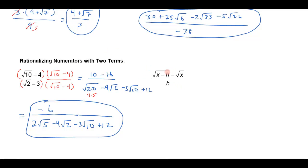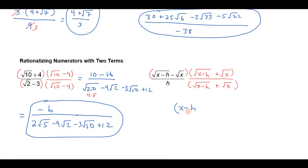Let's do one more here — rationalizing the numerator. This is a problem that actually comes from calculus. Suppose I wanted to simplify this, and what I could do is again multiply by the conjugate. In this case I'd multiply by the square root of x plus h plus the square root of x, and if I do that in the numerator I'll also have to do it in the denominator. When I do this in the numerator, multiplying these two together is going to give me just x plus h minus x. I know the outers and inners are going to cancel since they're conjugates, and the last ones give me minus x, because square root of x times square root of x is x.